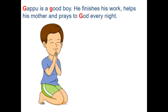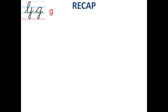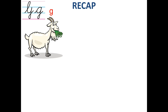Gappu is a good boy. He finishes his work, helps his mother, and prays to God every night. Now children, we will do a revision of all the G words. But first, look at this letter — this is capital G in cursive. This is small G in cursive.